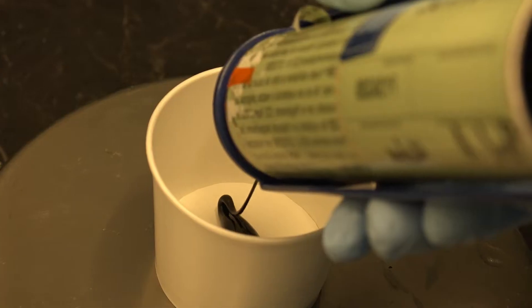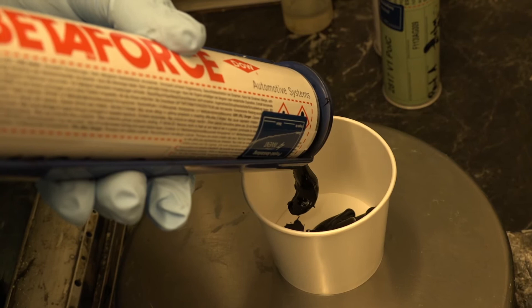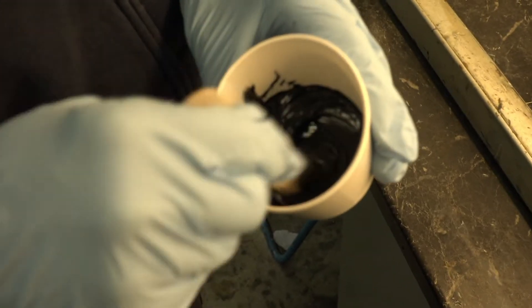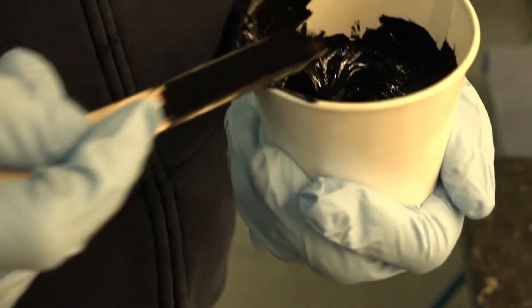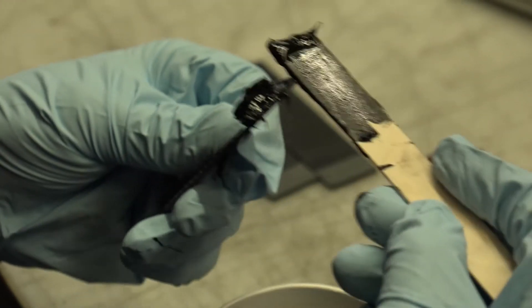In the next step, the two adhesive components are mixed in a mixing ratio which can be found in the adhesive's technical datasheet. Then, the adhesive mixture is applied to the composite parts.